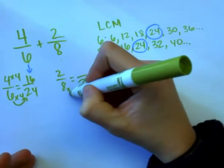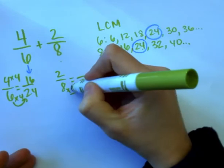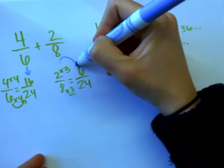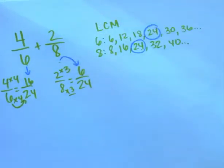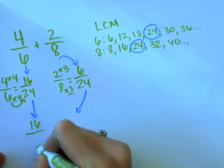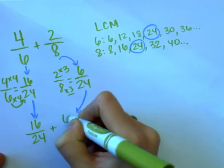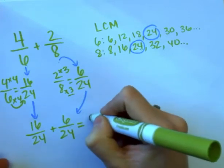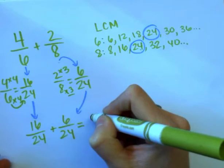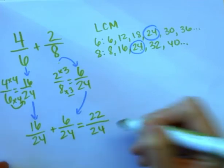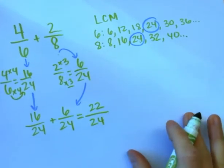Now let's do two-eighths. Eight times what gets us twenty-four? Three — eight times three is twenty-four. Two times three is six. Two-eighths converted to six twenty-fourths. Now we've converted them to like fractions. Our next step is adding: sixteen twenty-fourths plus six twenty-fourths. Sixteen plus six — I got twenty-two. So we have twenty-two twenty-fourths.